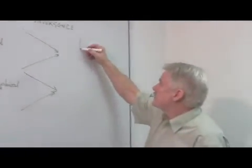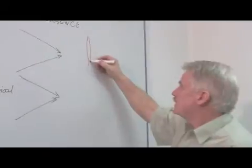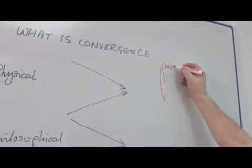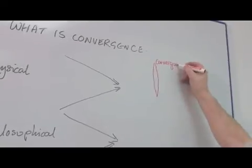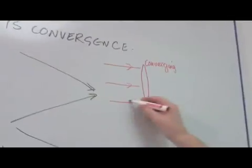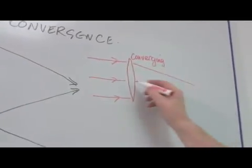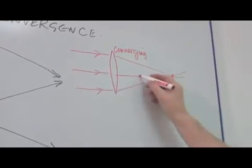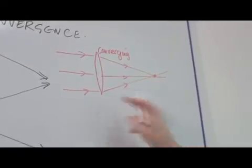If I have a lens like this, I call it a converging lens because of what it does to light. Light traveling in this direction is focused to a point here. And this is a point to which they converge. So this you might describe as convergence.